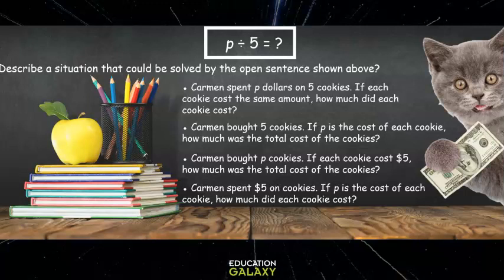So first, let's read through the situations. Carmen spent P dollars on 5 cookies. If each cookie cost the same amount, how much did each cookie cost? Second one says, Carmen bought 5 cookies. If P is the cost of each cookie, how much was the total cost of the cookies? Third one says, Carmen bought P cookies. If each cookie cost $5, how much was the total cost of the cookies? And the last one says, Carmen spent $5 on cookies. If P is the cost of each cookie, how much did each cookie cost?